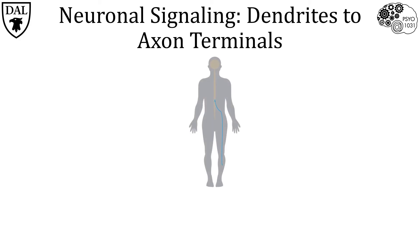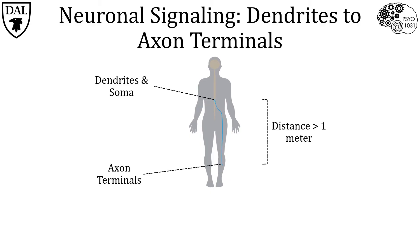For example, think about motor neurons in your spinal cord. A single motor neuron may have its dendrites in the spinal cord and its axon terminals all the way down your leg, signaling in your calf muscles. Thus, the question is raised: how are signals transmitted from a neuron's dendrites and soma to its axon terminals? The answer lies in the remarkable electrical properties of all neurons.